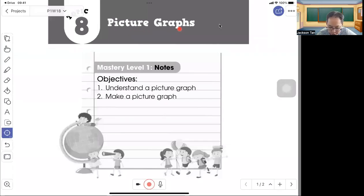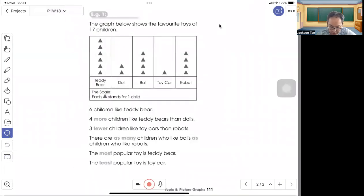Hello, welcome to Primary 1 picture graphs. In Mastery Level 1, the objective is to understand a picture graph and make a picture graph. The graph below shows the favorite toys of 17 children. Each triangle stands for one child.